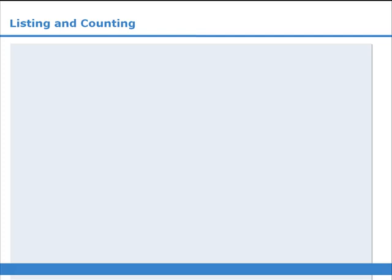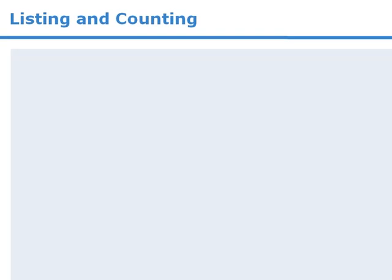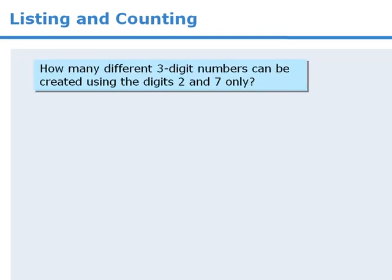In this lesson, we will examine one of the first strategies you should consider when tackling counting questions. We will introduce this strategy by way of example. In this particular question, we want to determine how many three-digit numbers can be created using only twos and sevens.